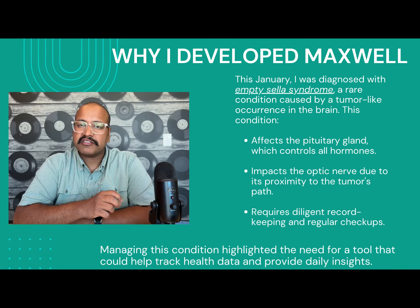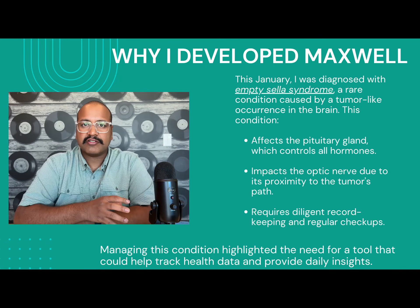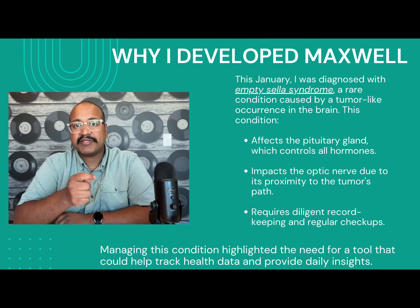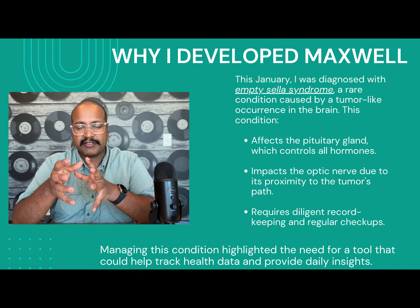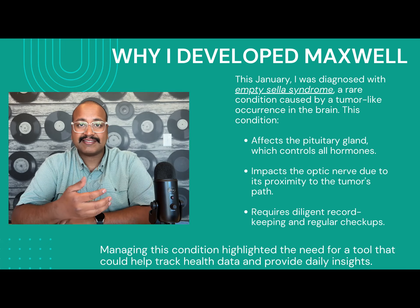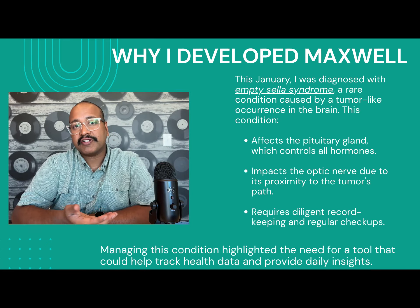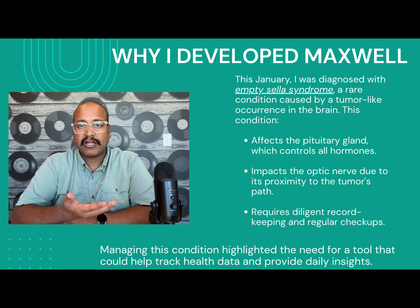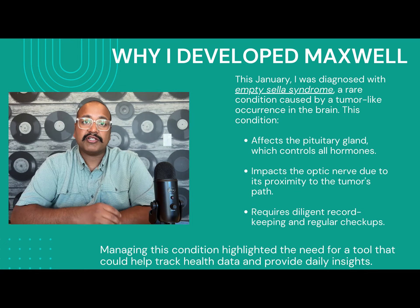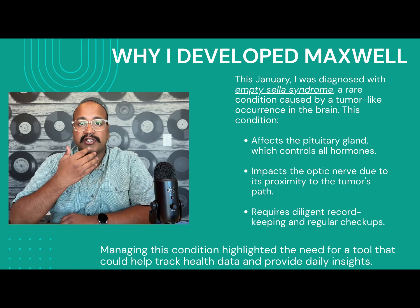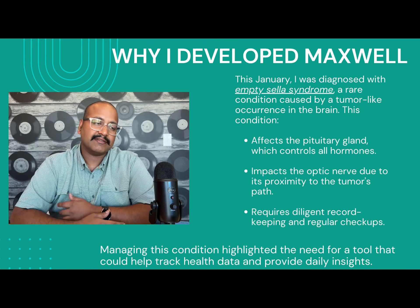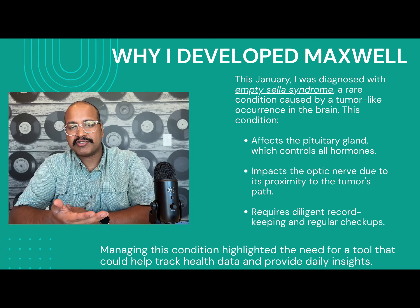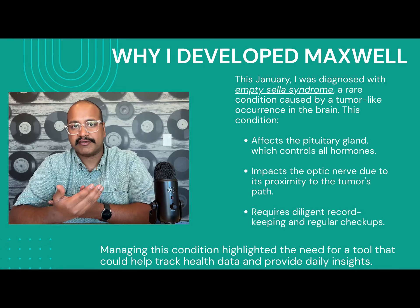This January, I was diagnosed with a rare condition called empty sella syndrome. This happens when a tumor-like growth occurs right by your pituitary gland and optic nerve. What this does is minimize the functioning of my pituitary gland, causing a lot of hormonal imbalance. This means I have to keep a diligent record of my health statistics — like what I eat, how much physical activity I'm doing, and so on.